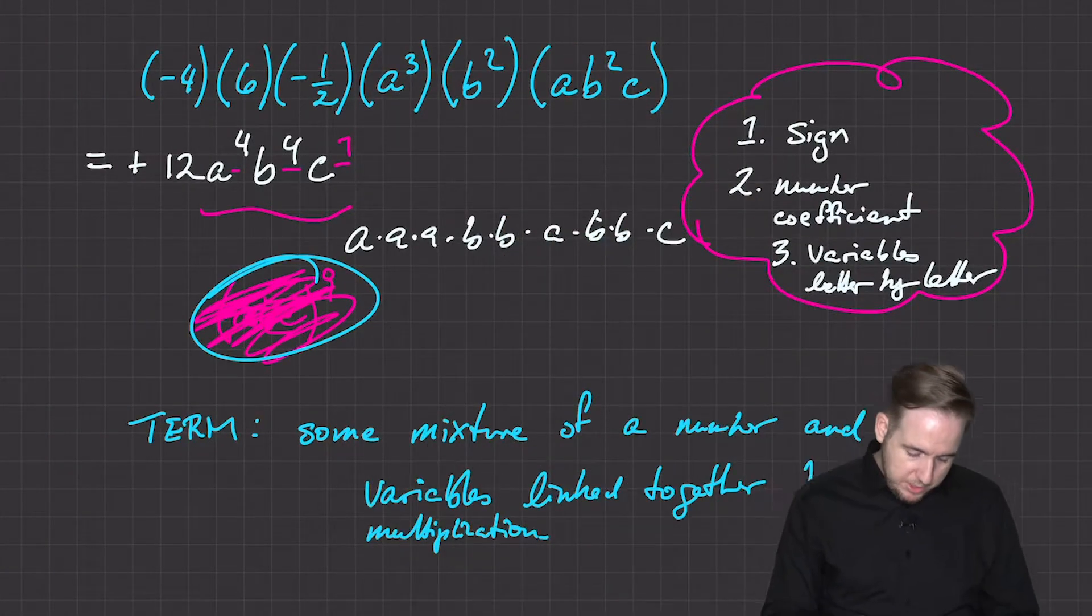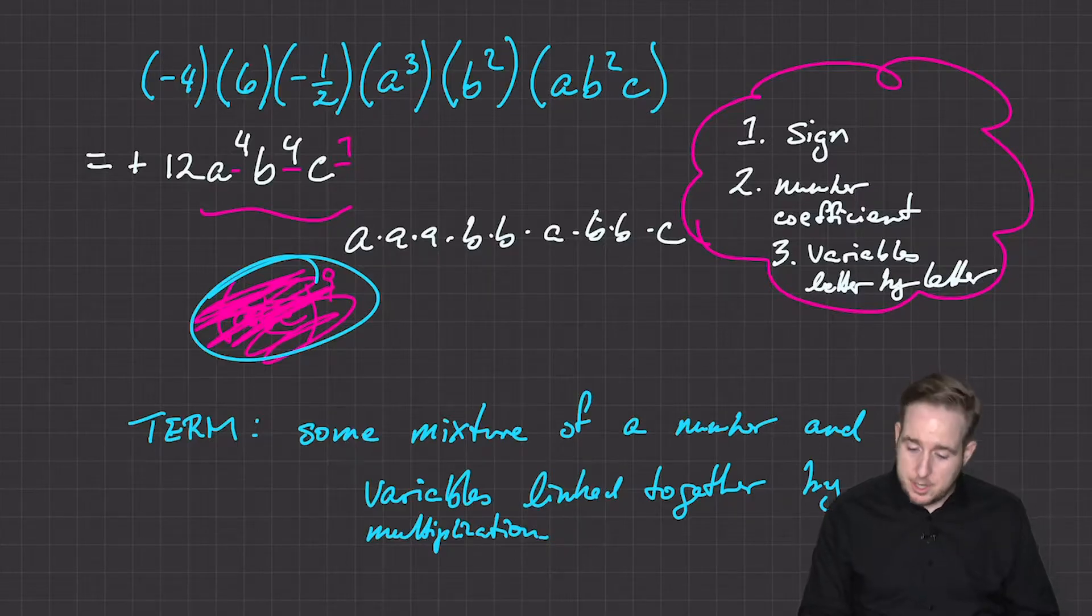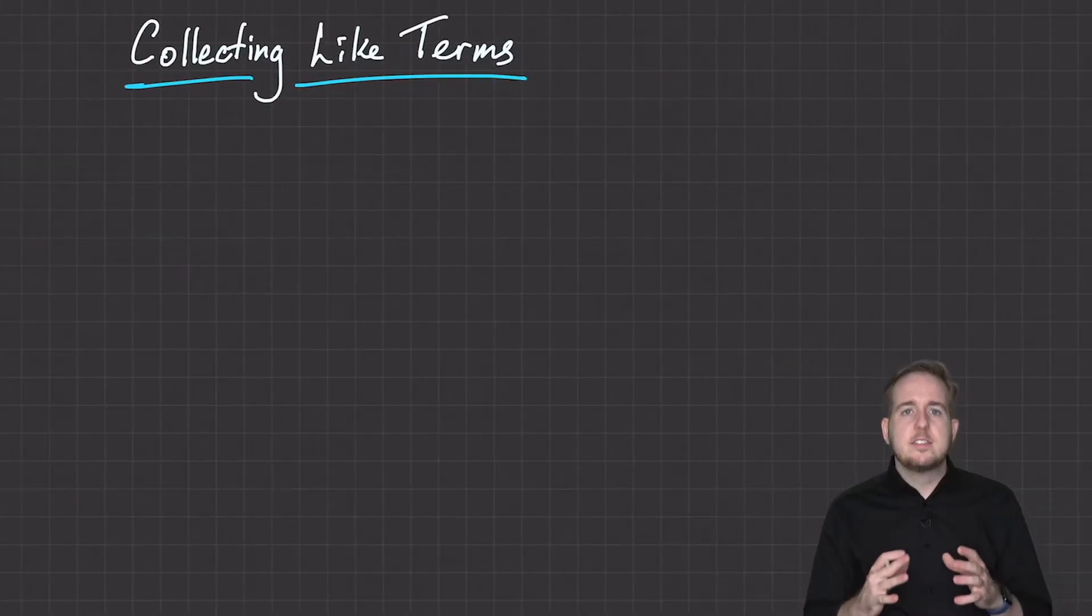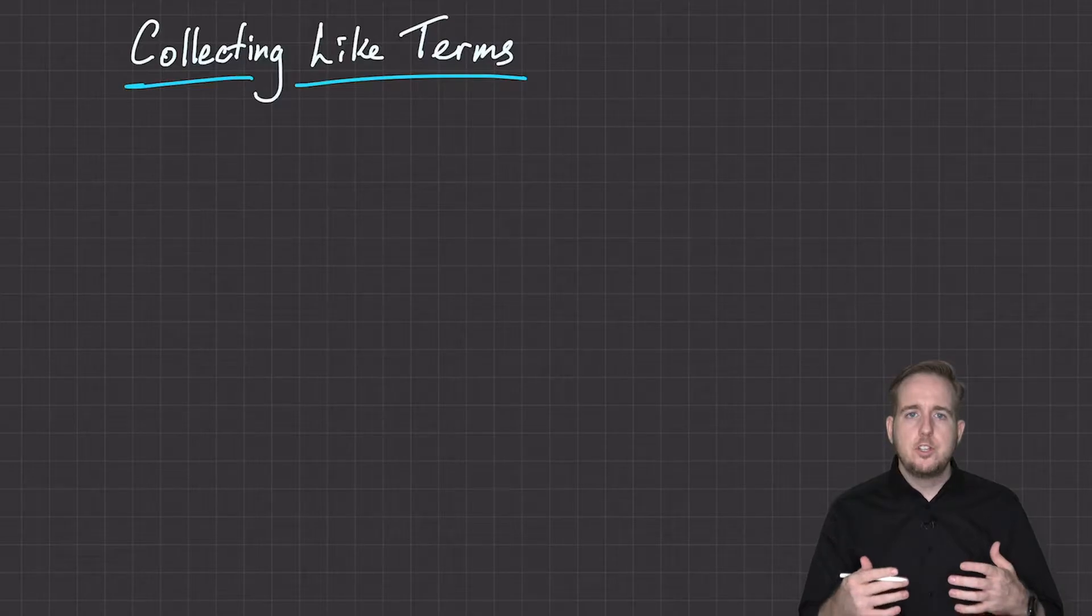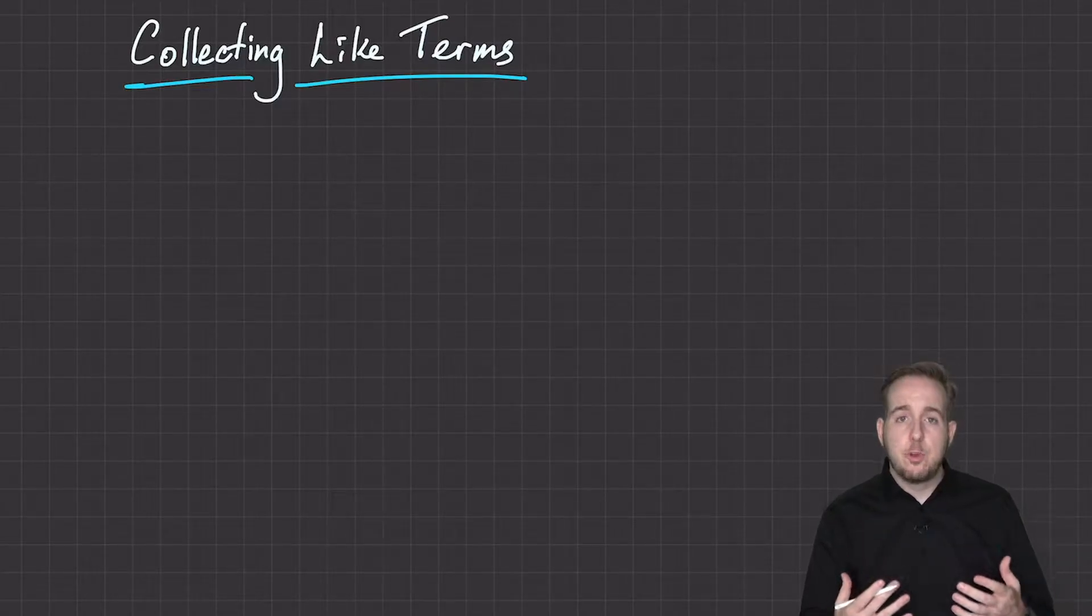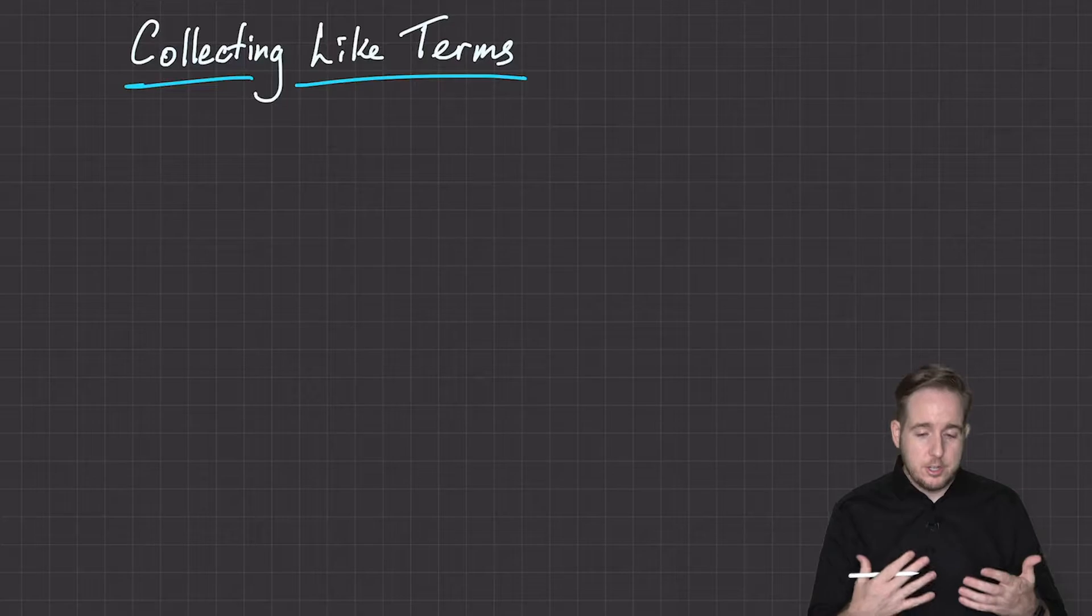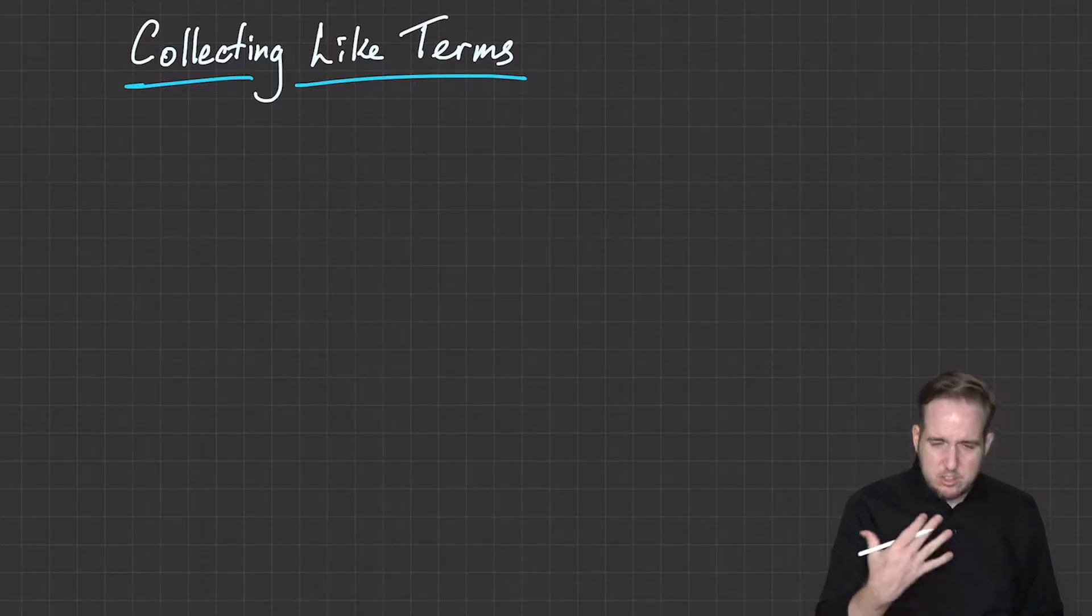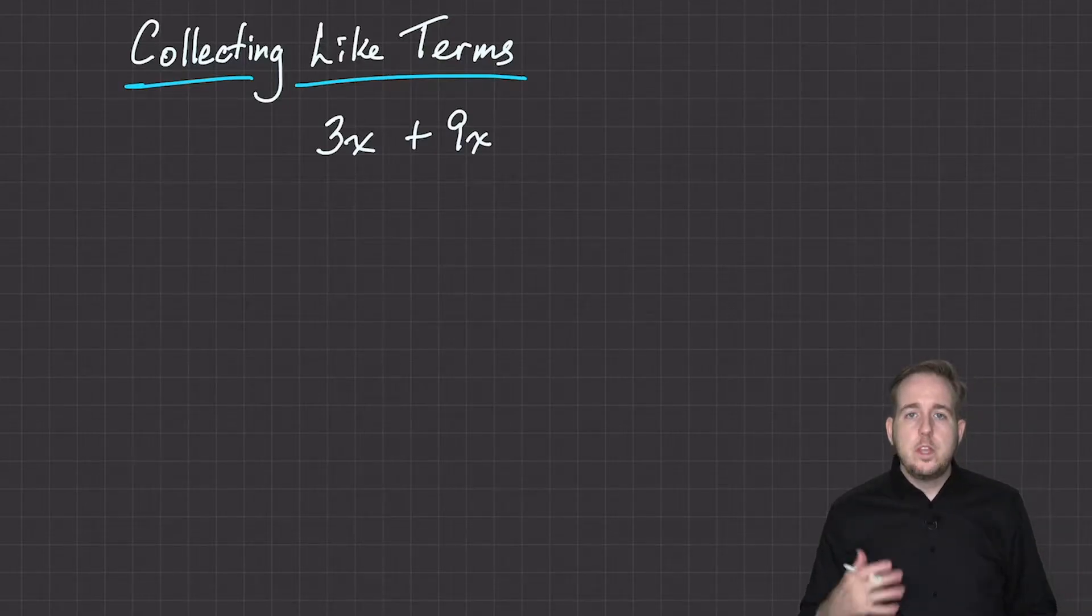So what we're going to look at today is collecting like terms. So last time, if you remember, we looked at what a term was, which is some mixture of numbers and variables linked together by multiplication. So when I say this is exciting, we're getting into the real meat, the essential part of high school math, which is what can we do with an expression?